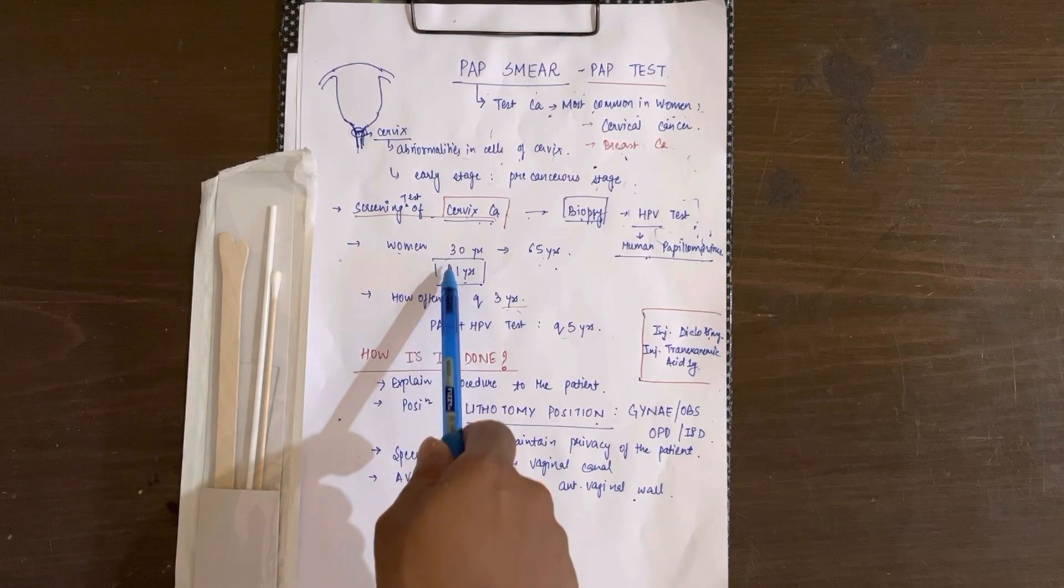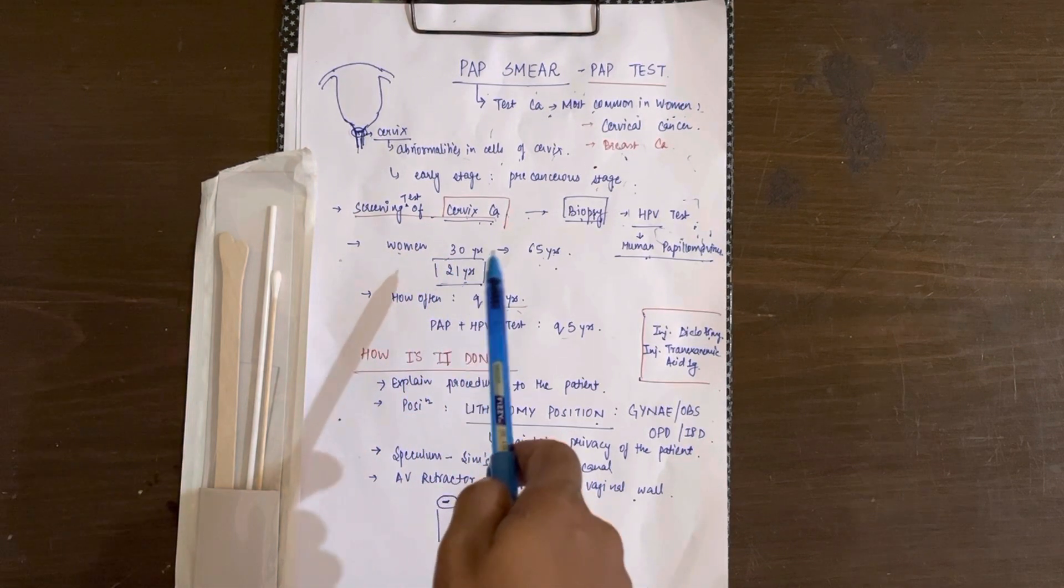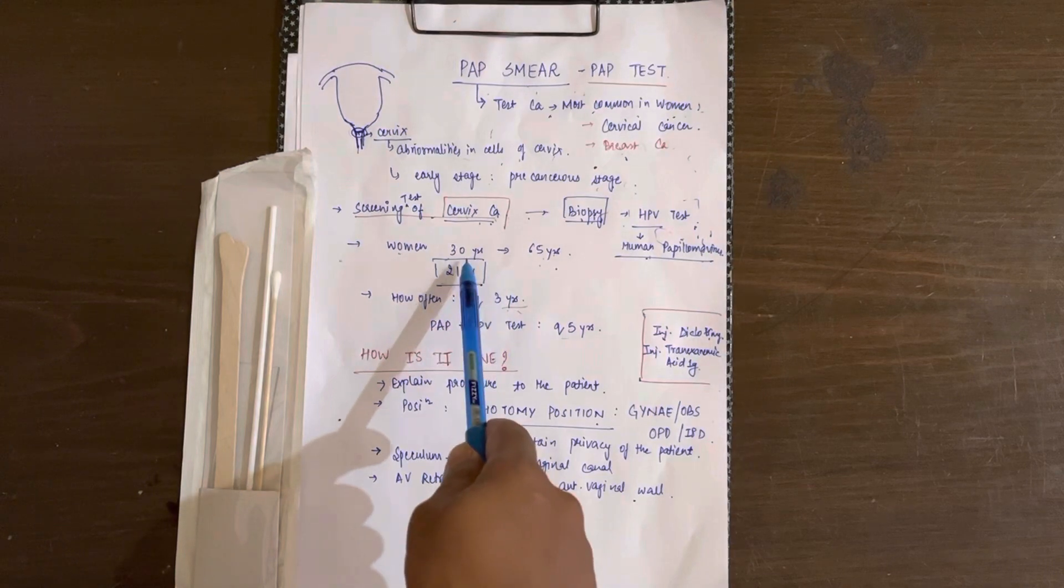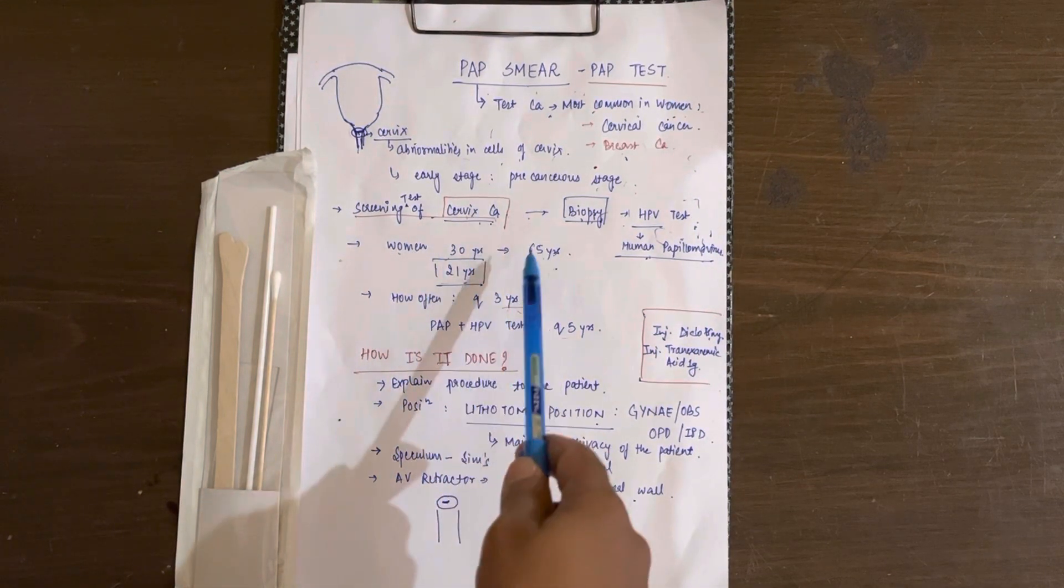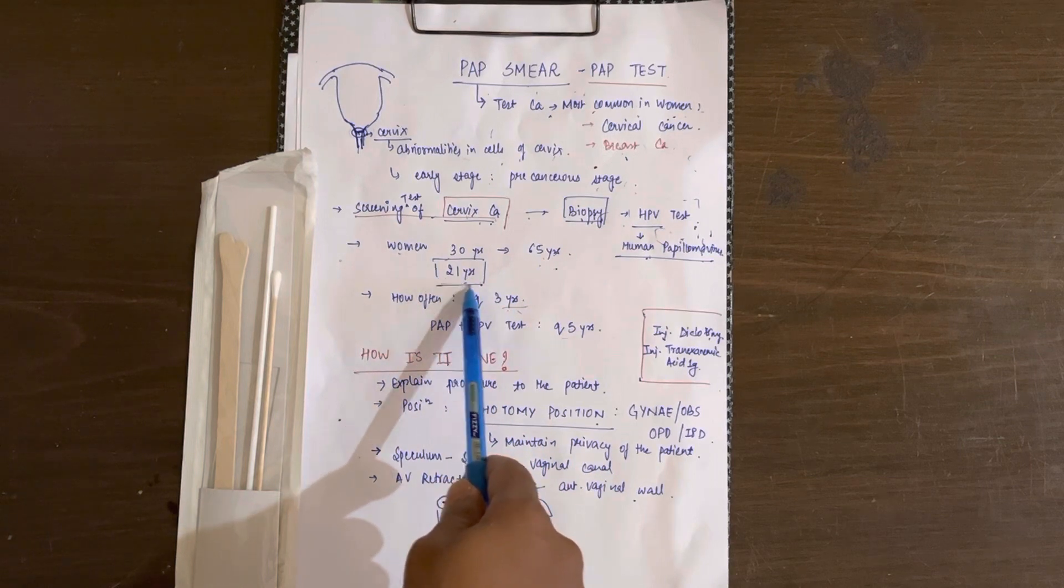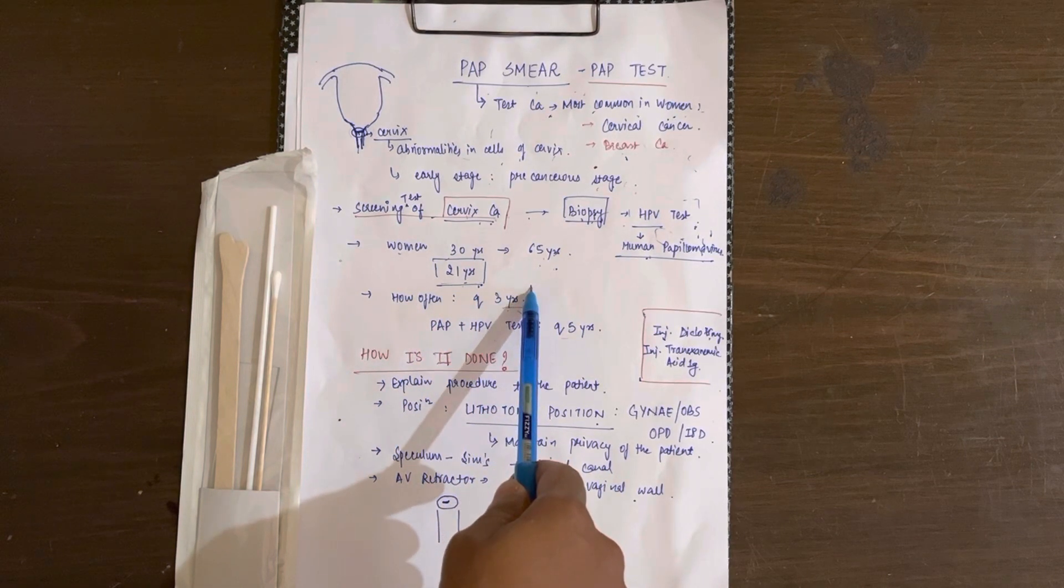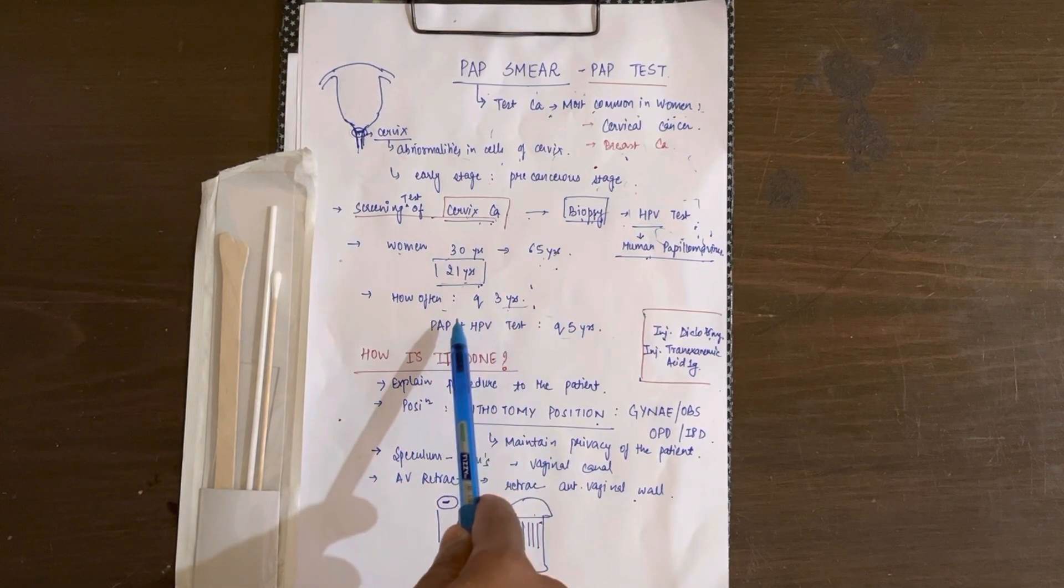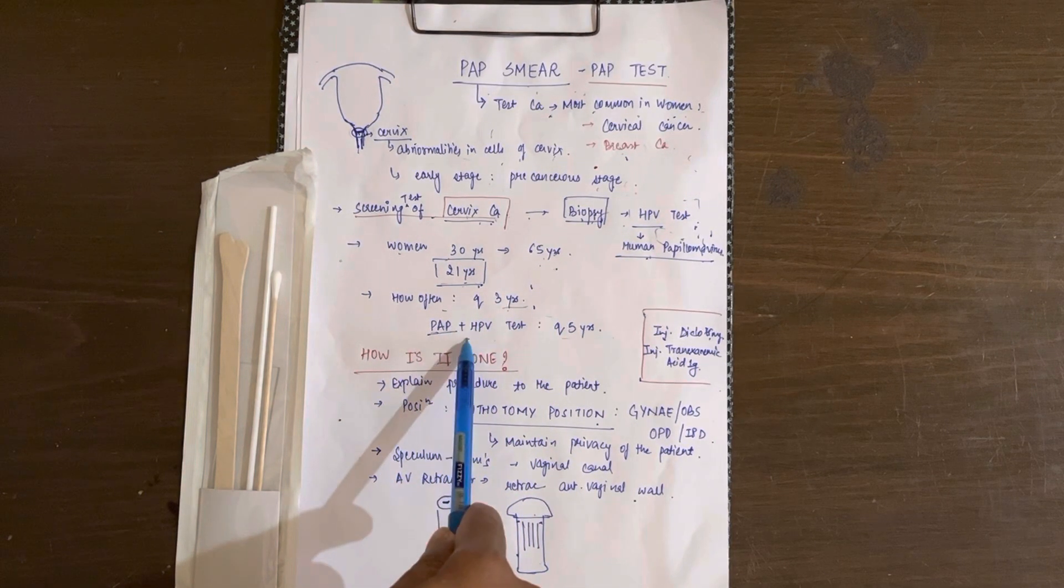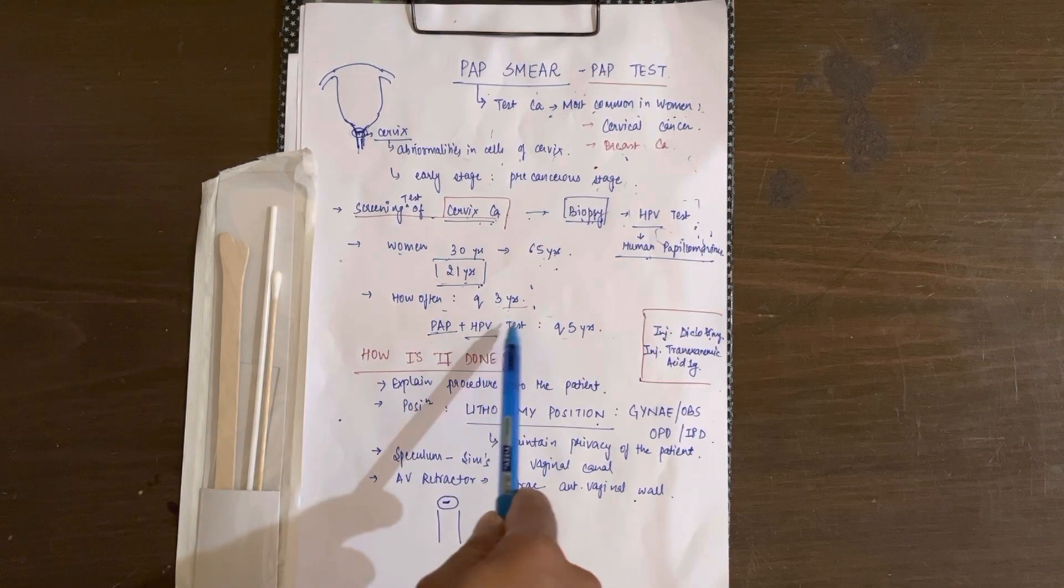We do the Pap test in women of reproductive age or sexually active age group, from 30 years to 65 years, or more precisely from 21 years to 65 years. It has to be done every three years, but if you're combining Pap test with HPV test, it can be done every five years.